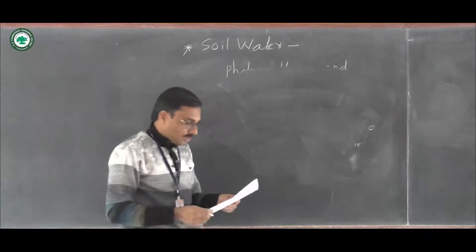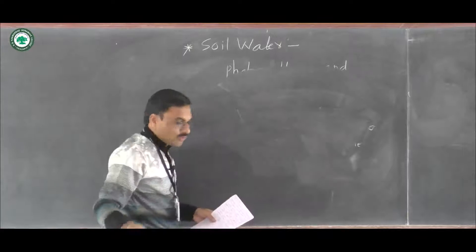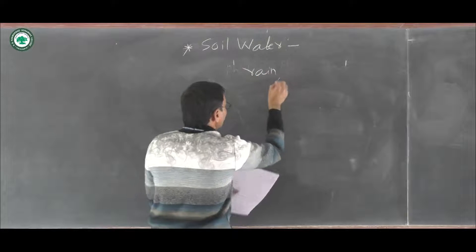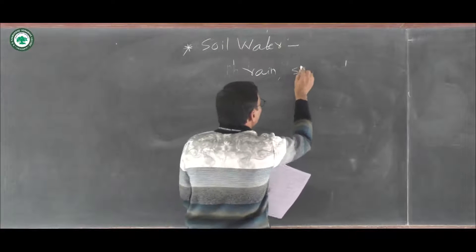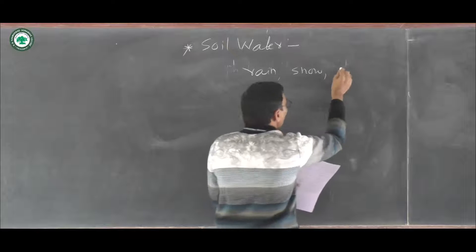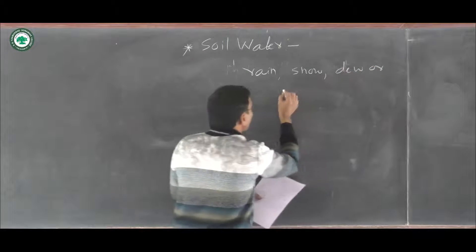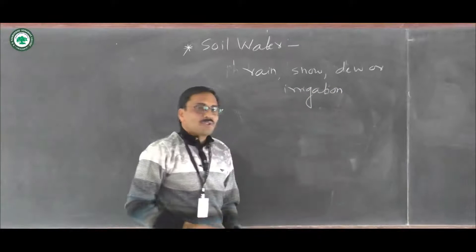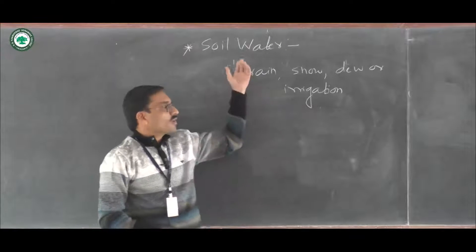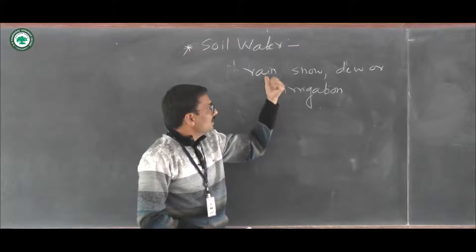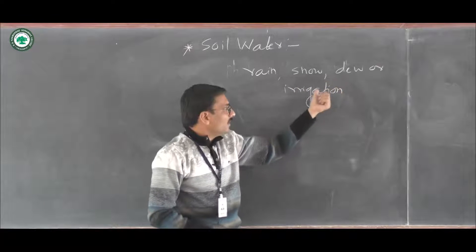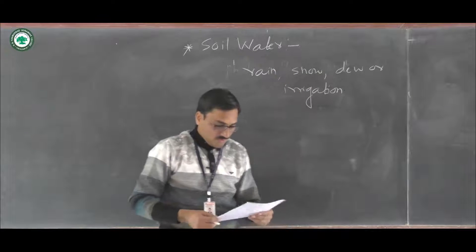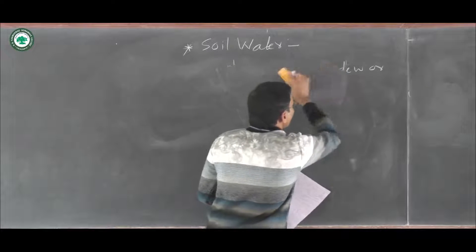Soil obtains water from rain, from snow, from dew, or also from irrigation. These are different sources through which the soil can absorb water. Soil water is divided into different forms.